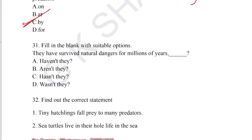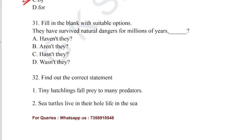Question number 31: fill in the blank with suitable options, from the question tag section. 'They have survived natural dangers for millions of years.' We must use the 'have' verb, add 'not', and use 'they'. Option A, 'haven't they?', is the correct answer for question number 31.